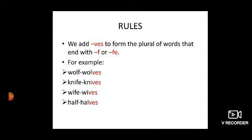Rule number third. We add V-E-S to form the plural of words that end with F or F-E. For example, wolf or wolves. We drop F and we add V-E-S at the last. Knife become knives. Wife become wives. Half become halves.